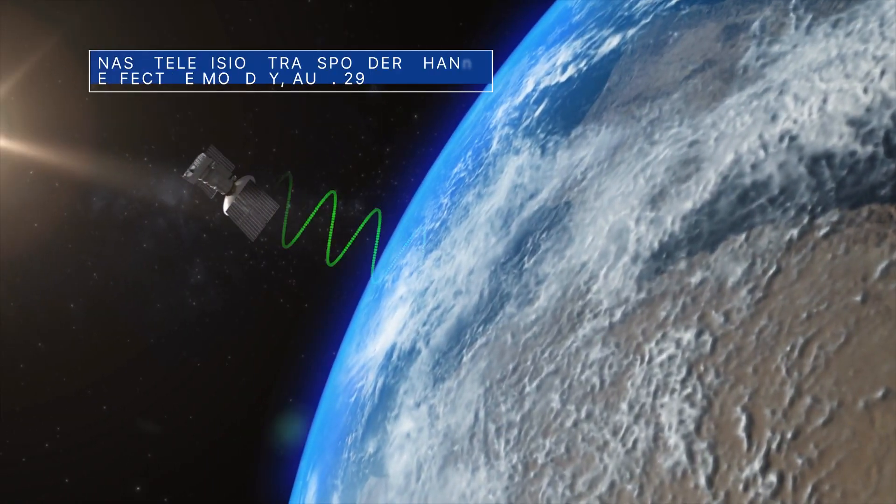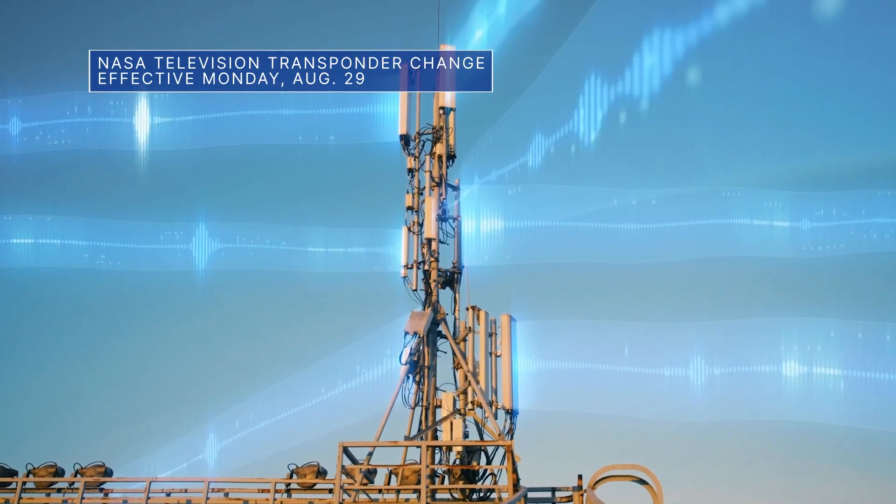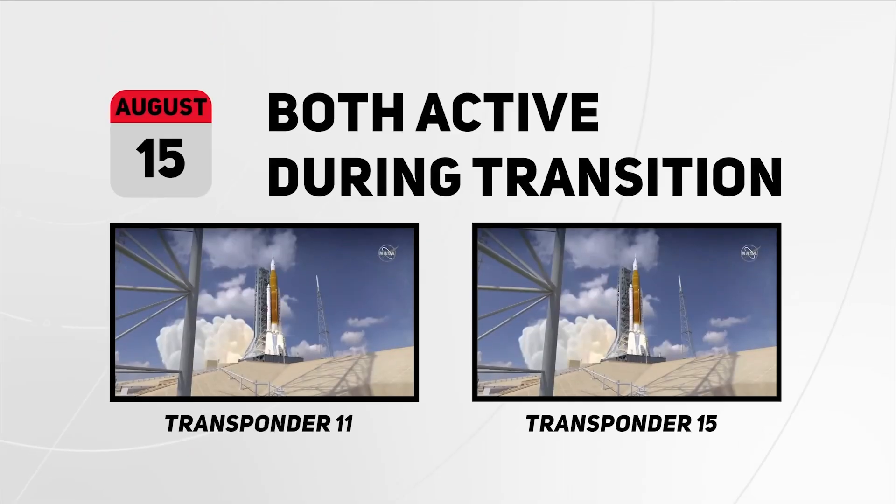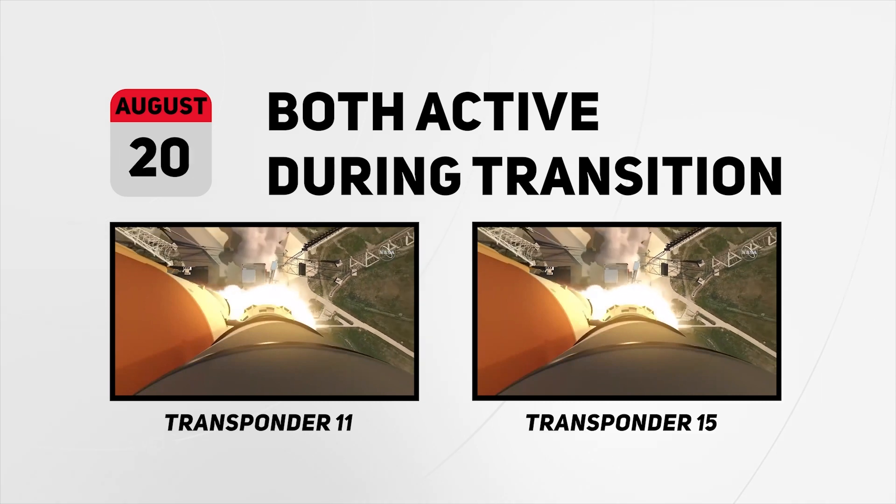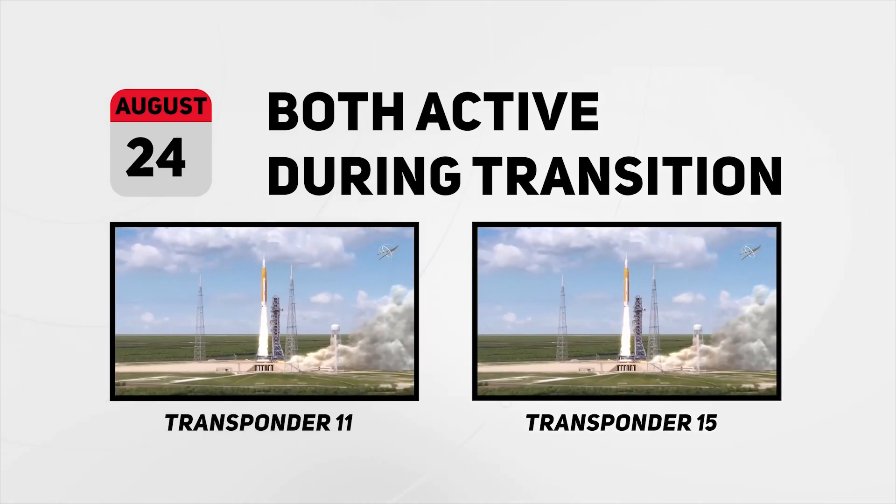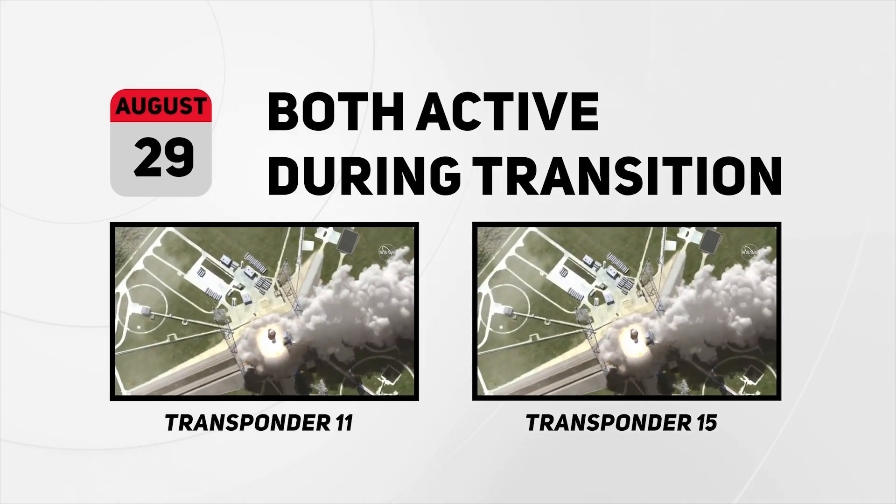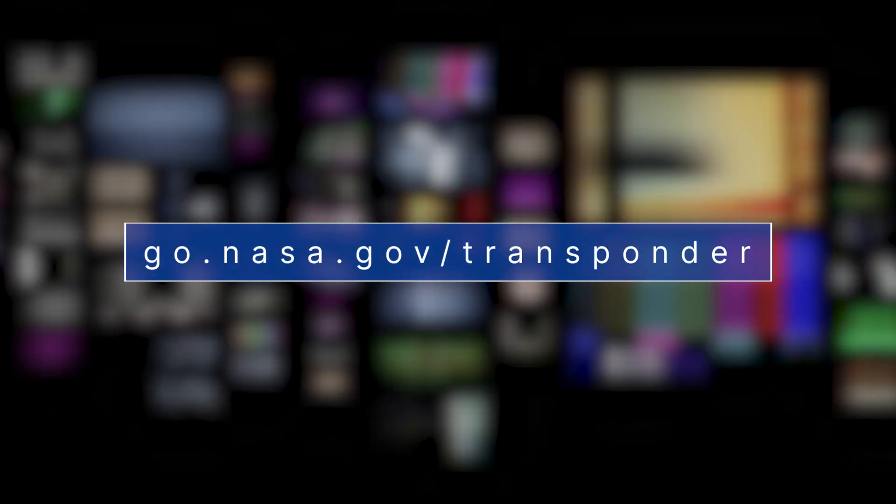A quick note about an upcoming change for NASA television. NASA TV programming on Galaxy 13 domestic satellite is moving from transponder 11 to transponder 15. Currently, both transponders are active, but distribution of NASA TV programming on transponder 11 will end on Monday, August 29. For complete details, please visit go.nasa.gov slash transponder.